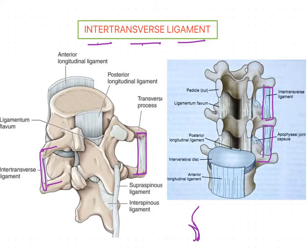In the thoracic region, the inter-transverse ligaments are like fibrous cords, and these fibrous cords are also blending or attached with the adjacent muscles. In the lumbar region, the inter-transverse ligaments become thin and membranous, and the membranous fibers form part of the thoracolumbar fascia.